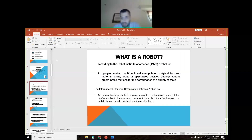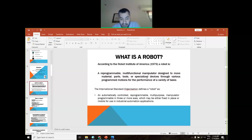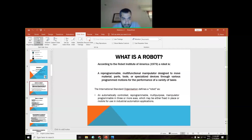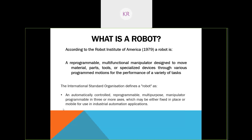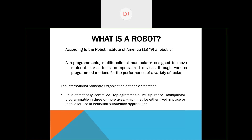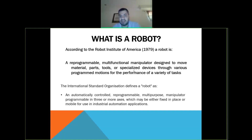According to the Robotics Institute of America, a robot is a reprogrammable, multi-functional manipulator designed to move parts, materials, tools, or specialized devices through various program motions for the performance of a variety of tasks. The ISO defines a robot as an automatically reprogrammable, multi-purpose manipulator, programmable in three or more axes, which may be fixed in place or mobile, for use in industrial automation applications. The main difference is that a robot doesn't have to be for industrial applications — it can be for any type of use.